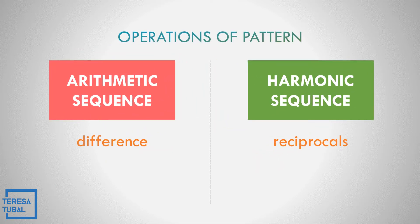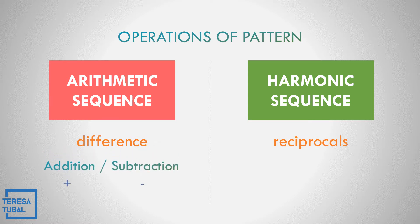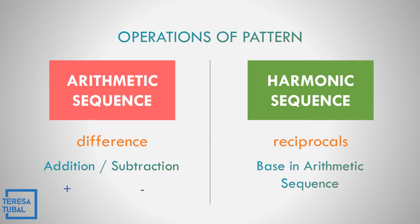The operations or pattern of arithmetic sequence is addition or subtraction — we may add or subtract, it depends on the given. While the harmonic sequence, that is the reciprocal of the arithmetic sequence, it is always based in arithmetic sequence.